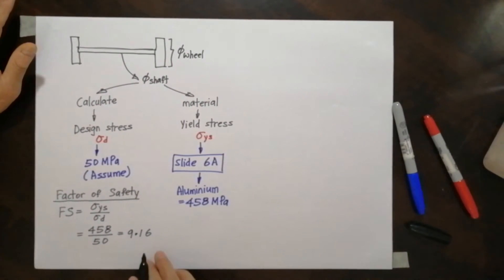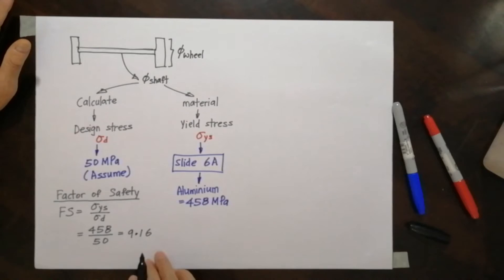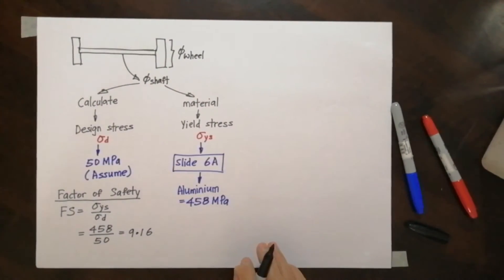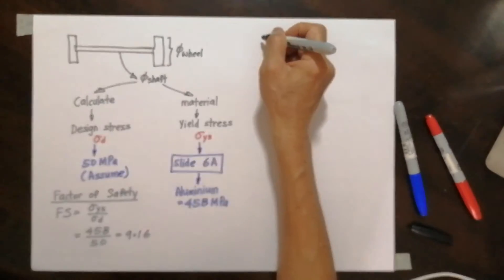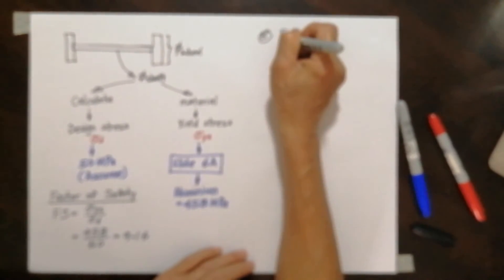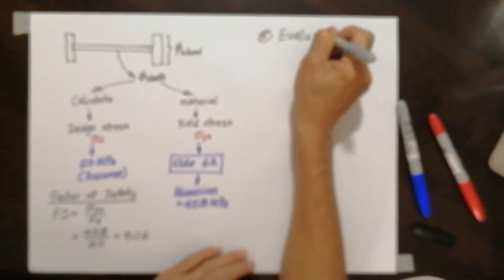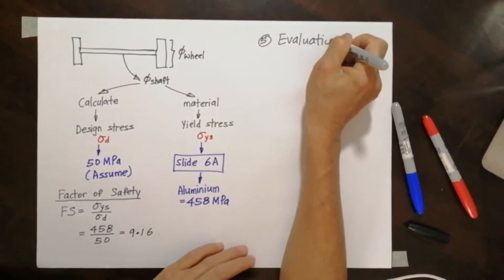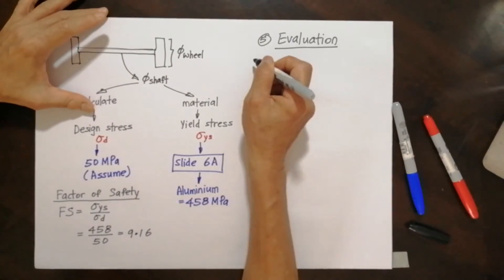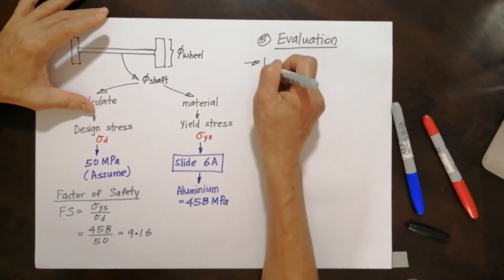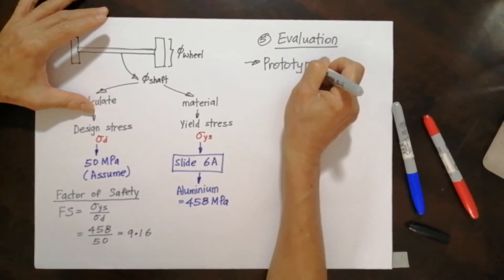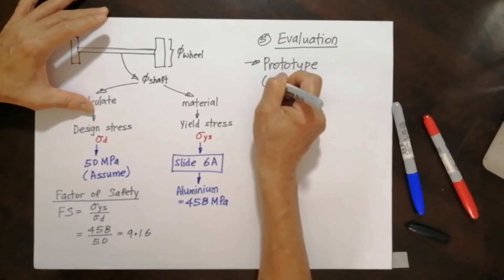So that's how the design stress and the material property are related. Now let's go to the fifth phase. The fifth phase is evaluation. The main thing in this phase is that I need to build a prototype.